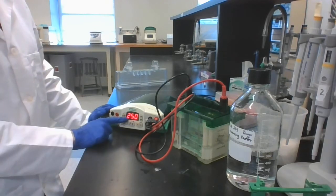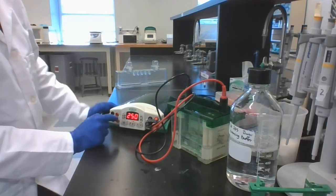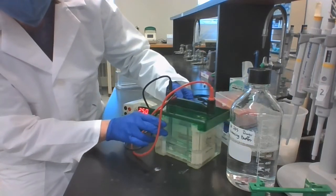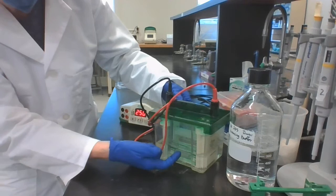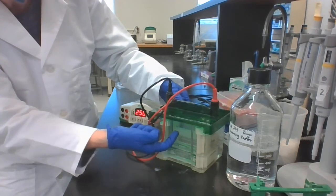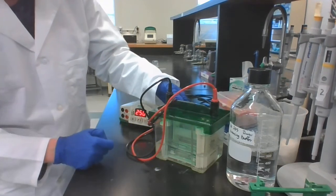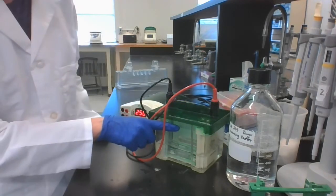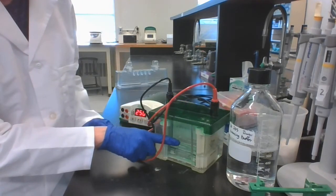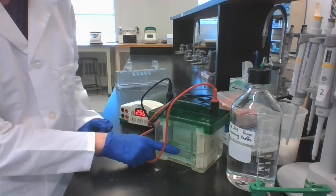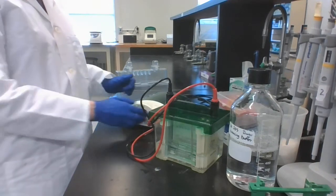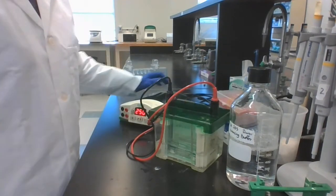And then this is the readout of how many volts they're on. As it's running, you should be able to see little bubbles coming up from the bottom into the middle buffer. And that's an indication that the current is flowing correctly. You'll be able to watch as the blue dye goes down, and then you'll want to stop it before it reaches the bottom of your glass plate.